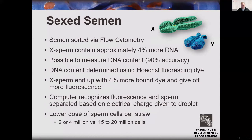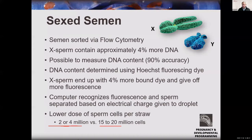The process of sexing semen is done through a process called flow cytometry. The X chromosome sperm contain about 4% more DNA — they're slightly larger — and that DNA can be measured with about 90% accuracy. The DNA content is determined using fluorescent dye. The sperm binds the dye and gives off fluorescence, and a computer recognizes whether it will be male or female, gives it a positive or negative charge, and separates it. Currently, sexed semen is delivered in straws of around 2.1 to 4 million viable sperm, versus conventional semen at about 15 to 20 million sperm.